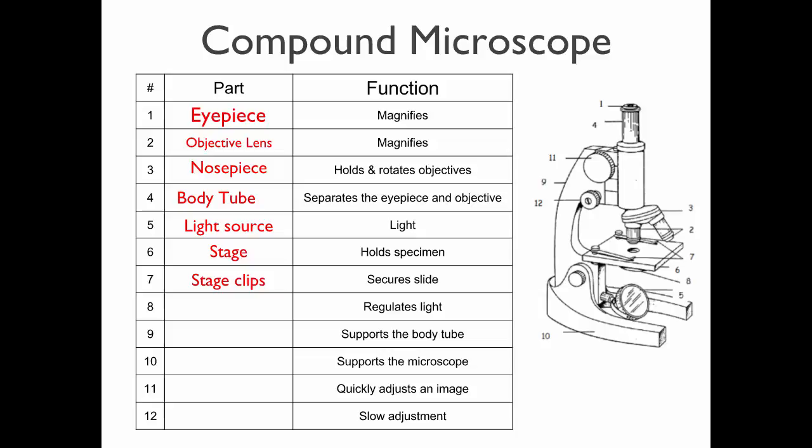Below the stage is a dial that you can turn. The bottom has several holes of different sizes. What do you think that controls? The amount of light coming through. If it's too bright you can change this to make it darker or vice versa. It's called the diaphragm.